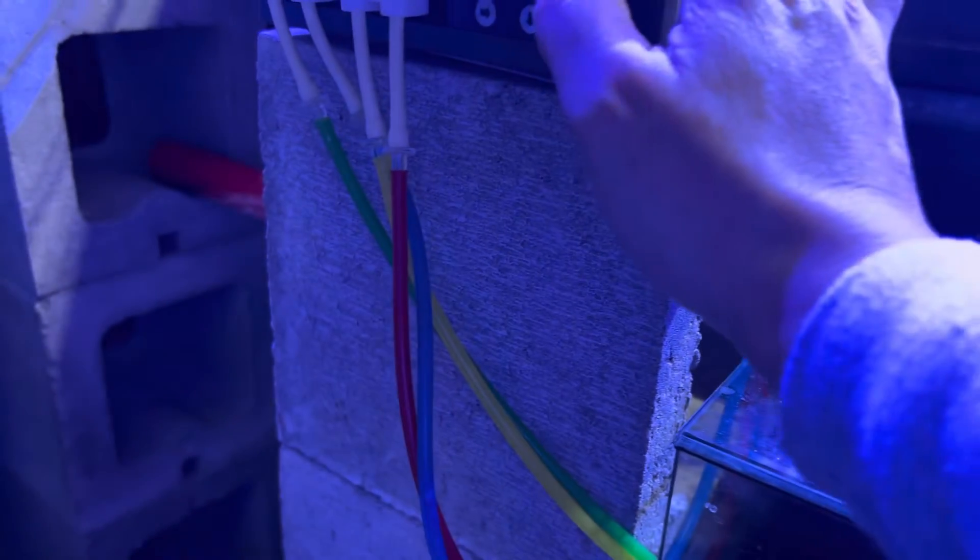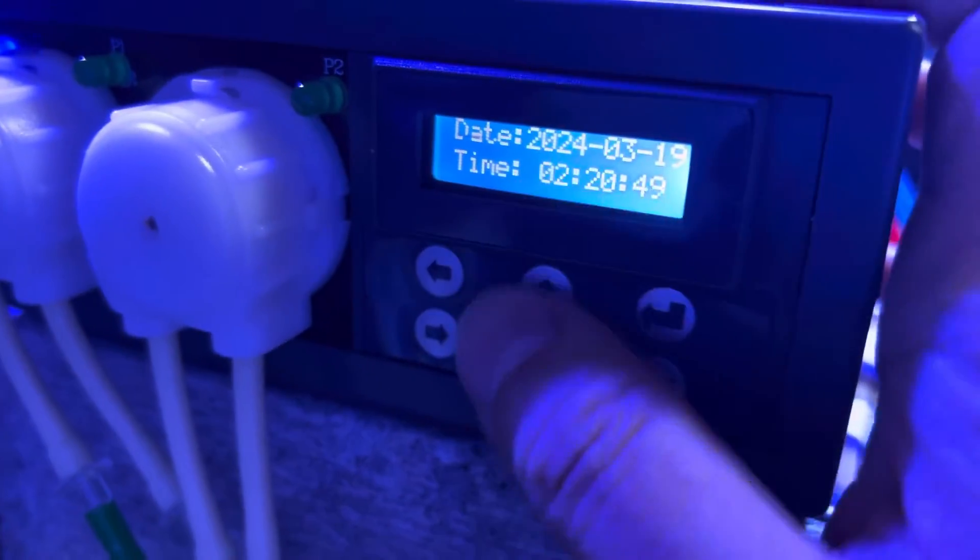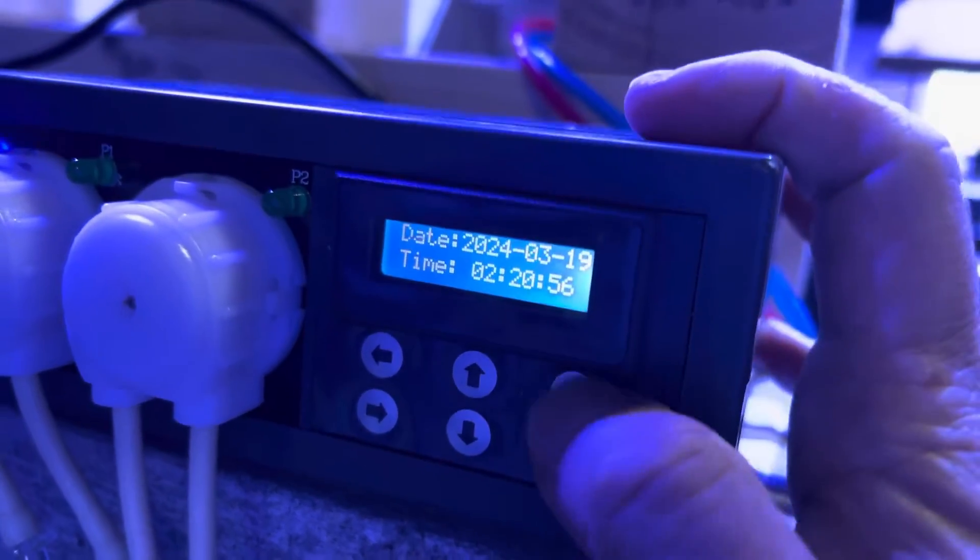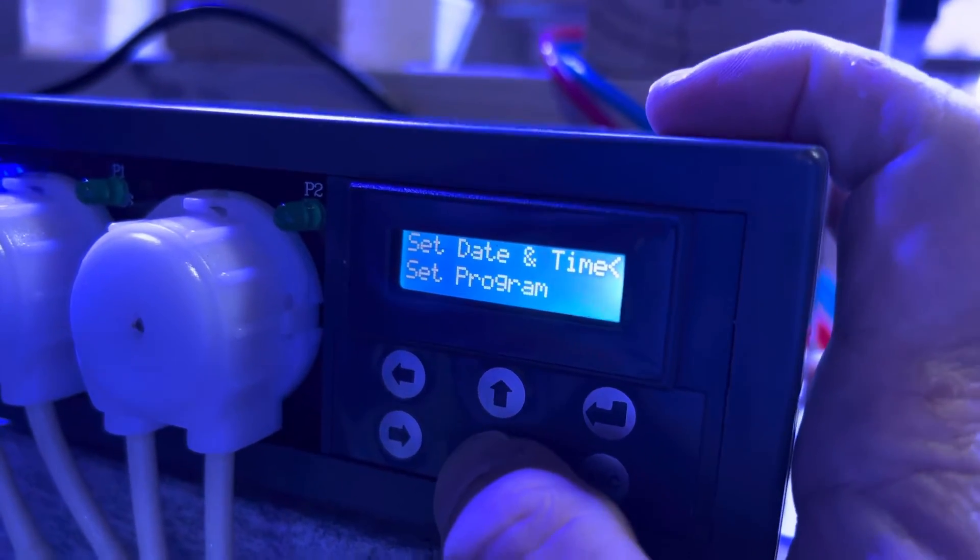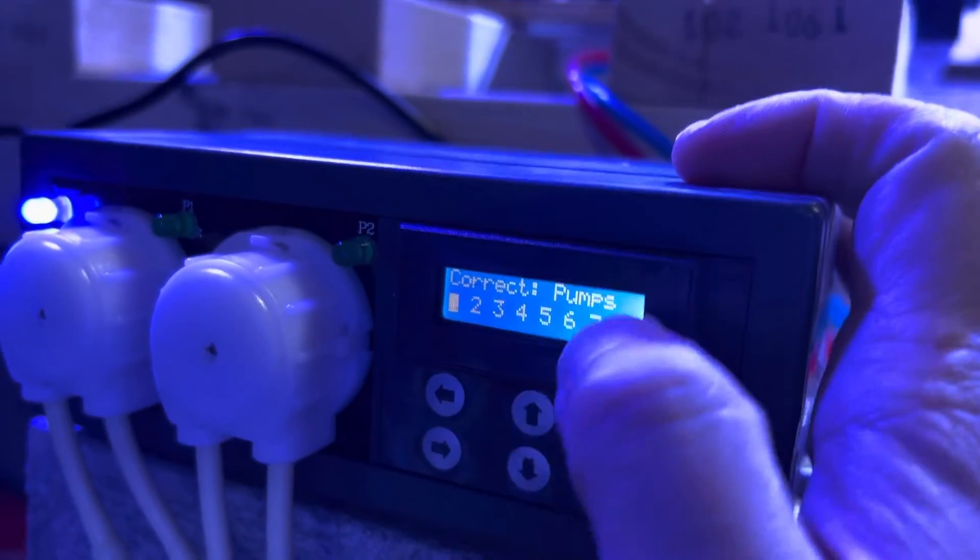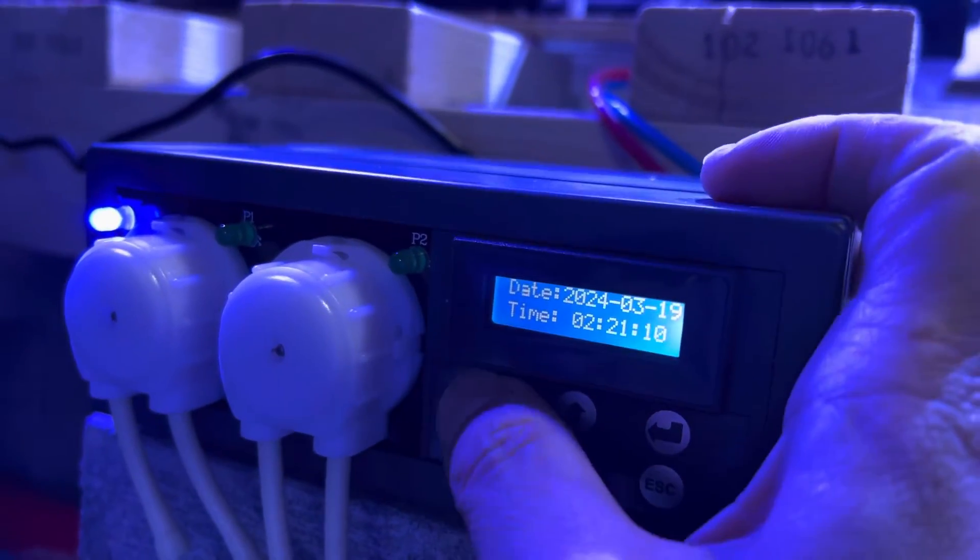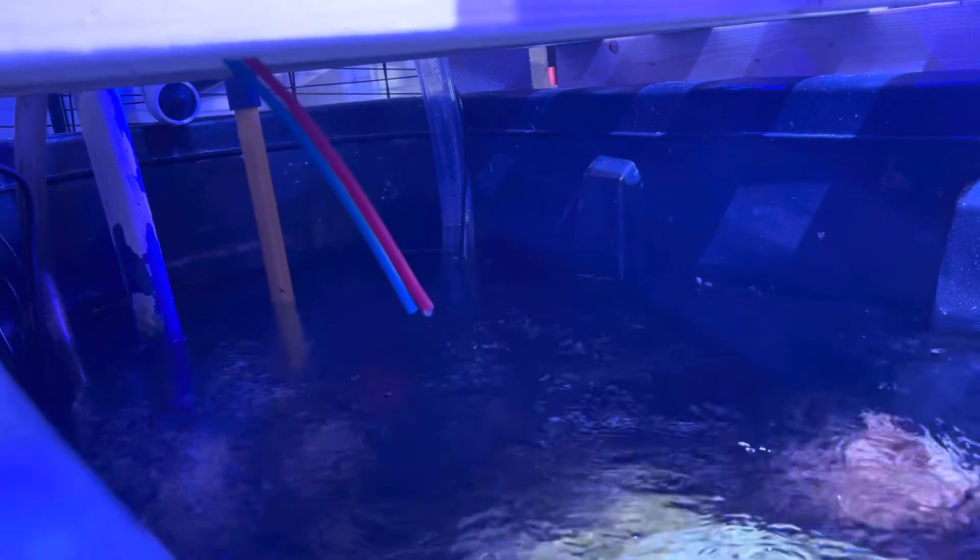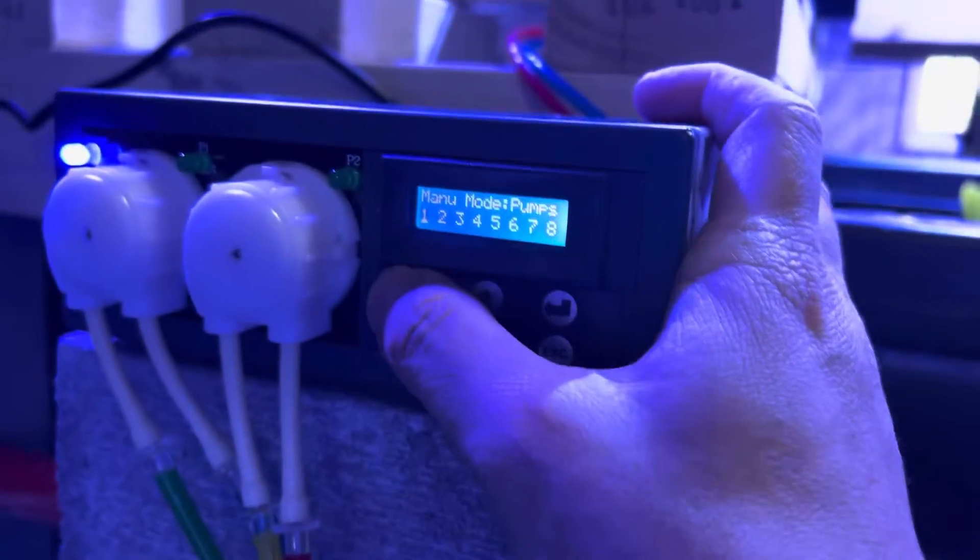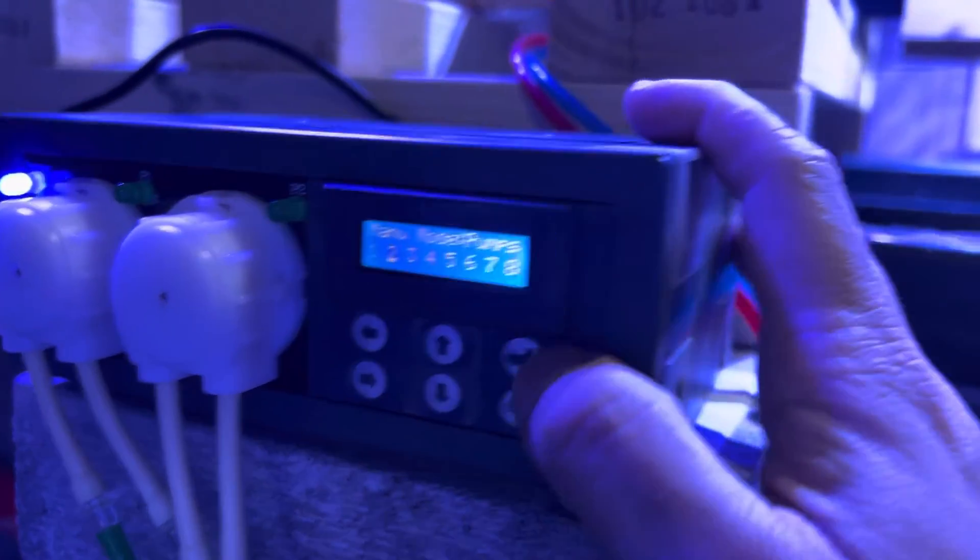I'm just going to show you what they look like. To prime your tube and manually drip, press enter. Actually, before I do that, I'll press the left and right arrow. There we go. Pump number one, if I press enter, it will just start dripping. There we go. If I go back and select pump number two and press enter again, this one will drip manually. That's how the manual priming is.